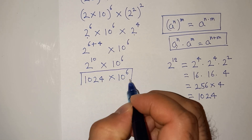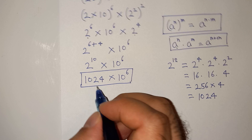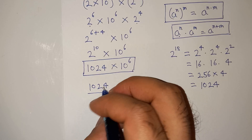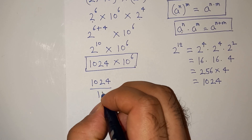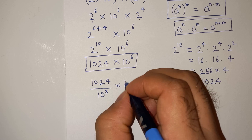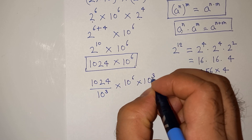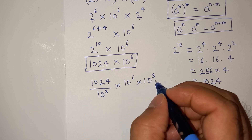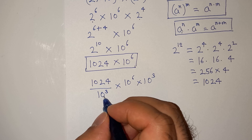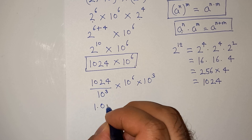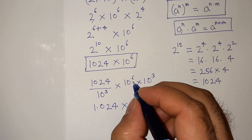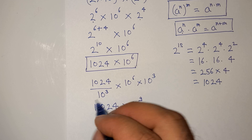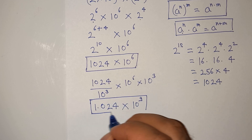So either 1024 multiplied 10 power 6 could be our final answer, or we can further simplify by writing 1024 as 1024 divided by 1000 multiplied by 1000, where 1000 is 10 cube. Dividing and multiplying by 10 power 3 gives 1.024 multiplied by 10 power 6 plus 3, which is 1.024 multiplied 10 power 9. This could also be our final answer.